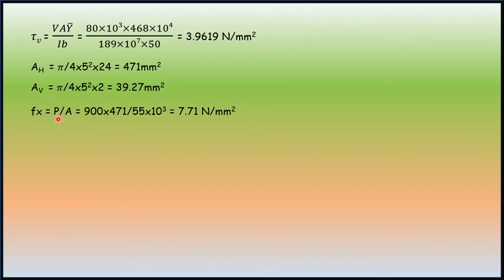fx equals P by A, 900 into 471. This is horizontal pre-stressing forces 900 mm square. So we have fx as 7.71 Newton per mm square. Similarly fy, P by A, we are able to get this in terms of P by A, area is in the web. So web dimensions we are considering in this part of vertical pre-stressing. It comes to 4.7 Newton per mm square.